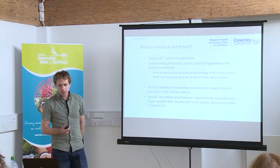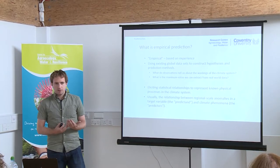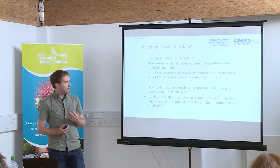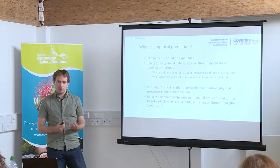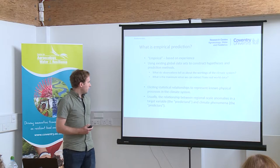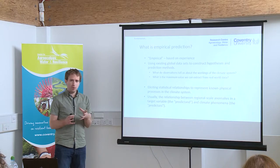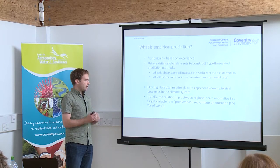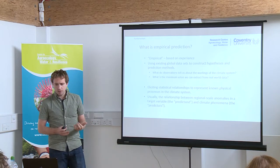By empirical, as the word implies, we're generating predictions based on experience — using evidence from the observational record. We're asking what observations tell us about the workings of the climate system and what is the maximum value we can extract from real-world data. In practice, this involves identifying statistical relationships to represent the best-known physical processes in the climate system — usually relating regional-scale anomalies in a target variable to climate phenomena on slightly larger scales.